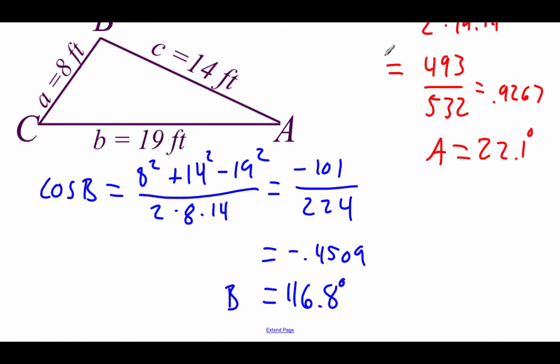Using what we know about the angles inside of a triangle — since we've got two angles, we can just subtract those from 180 — angle C ends up being 41.1 degrees.